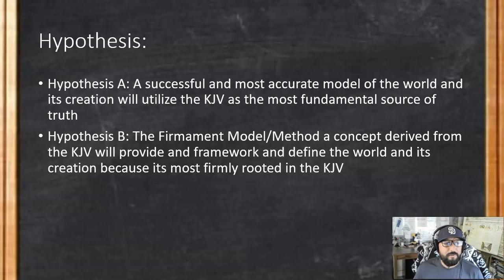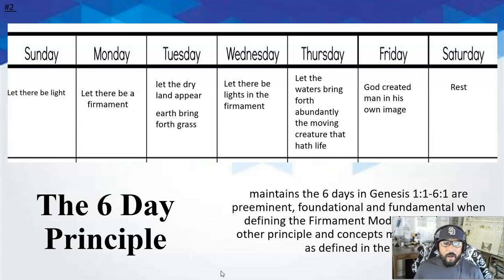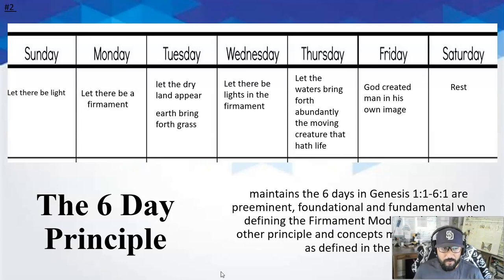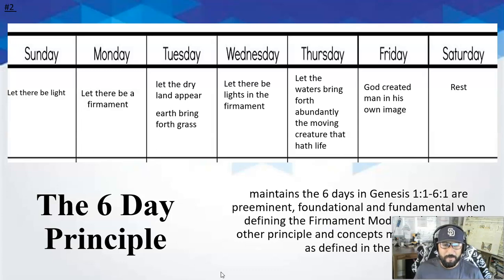The next principle is the Six-Day Principle. This is the second most important concept — when you define the world, the six days of Genesis are the most important things that must be defined, and all other concepts and principles must be aligned to them. The firmament is also part of the six days. So when you're going to define anything else in terms of the nature of the world, these must be defined first and everything else is superseded by these principles. These are the most important.